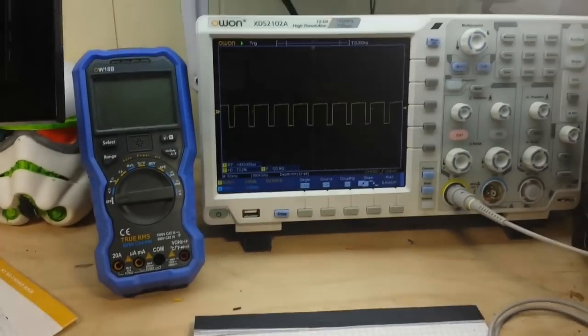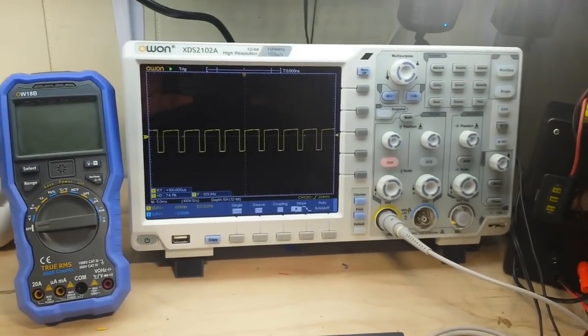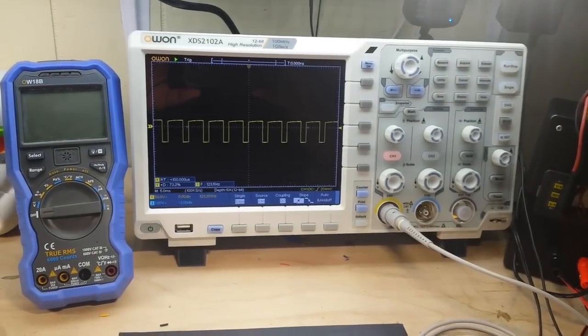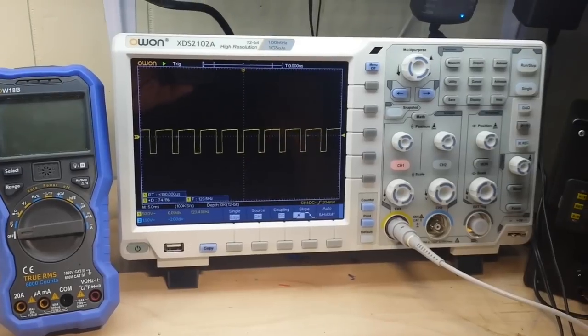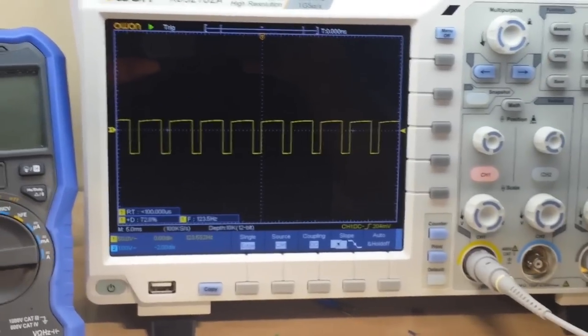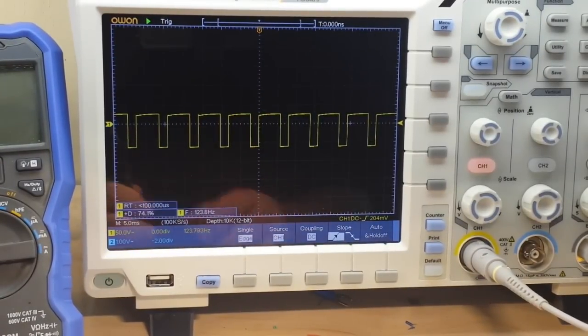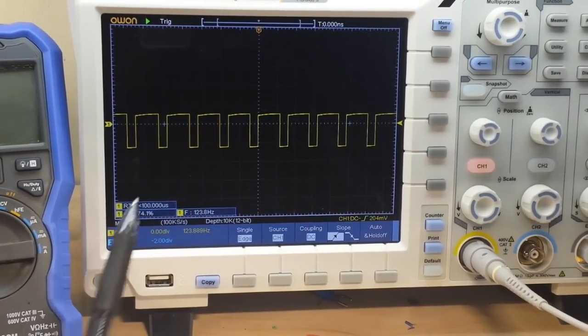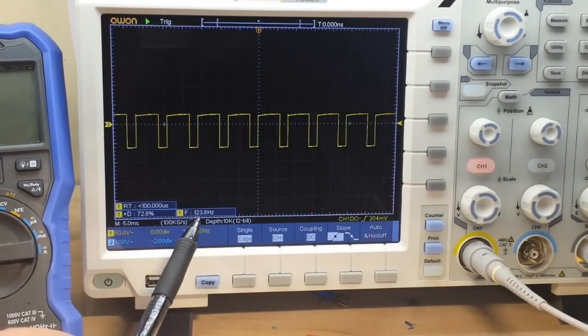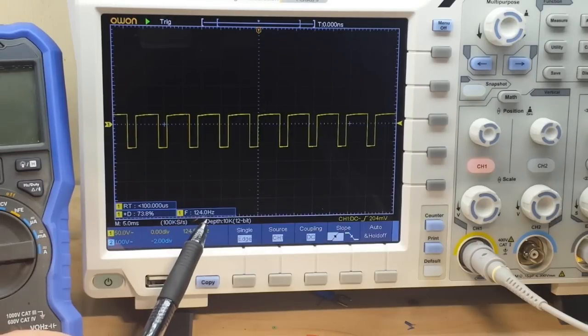We'll take a look up at the oscilloscope. This is my new O1-XDS-2102A, a 12-bit oscilloscope. Very nice. And you can see our frequency is 123.8 Hz.